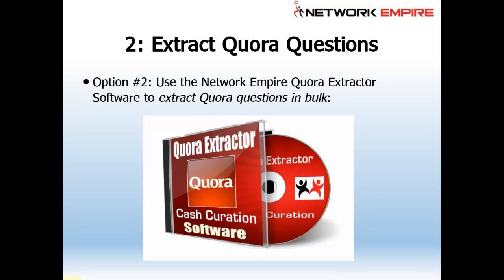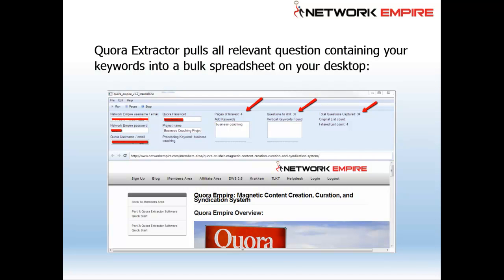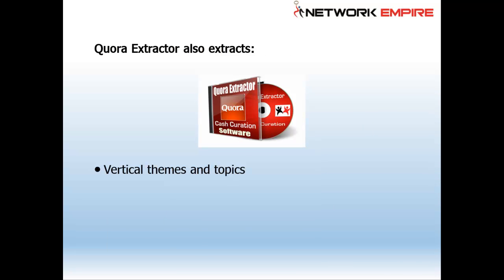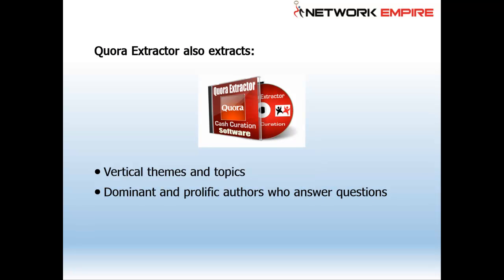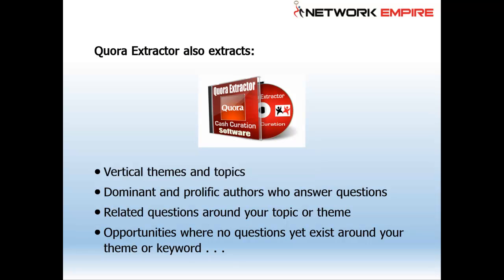Option two is to use the Network Empire Quora Extractor software to extract Quora questions in bulk — that's the tool we developed to help with your ISDNA process. Quora Extractor pulls all relevant questions containing your keywords into a bulk spreadsheet on your desktop. It also extracts vertical themes and topics, dominant and prolific authors, related questions around your topic, and opportunities where no questions yet exist around your theme or keyword — that's the opportunity for inception on Quora.